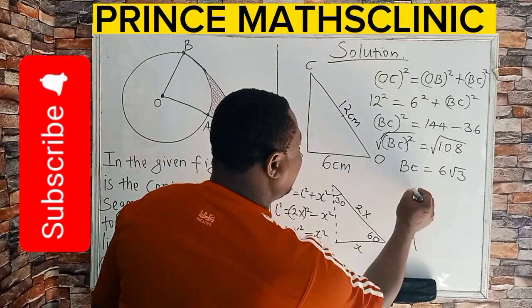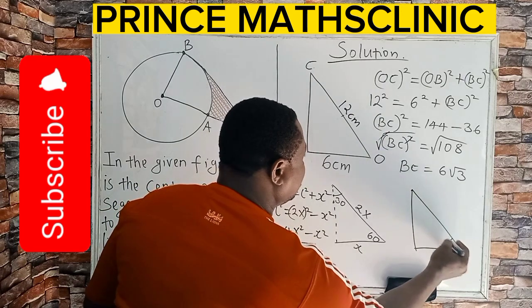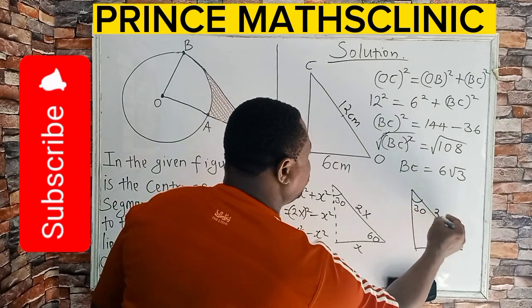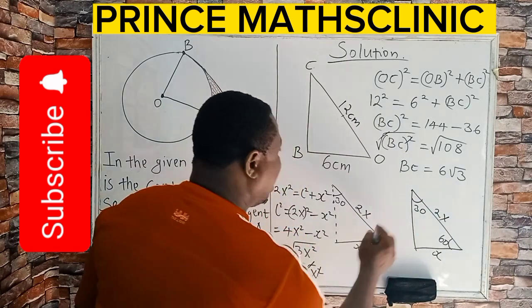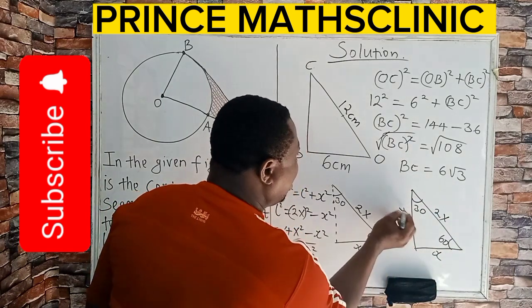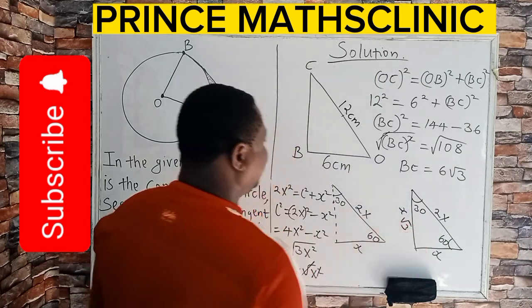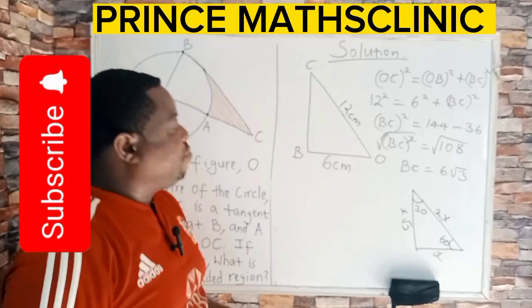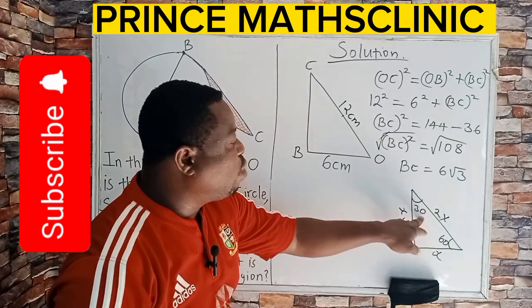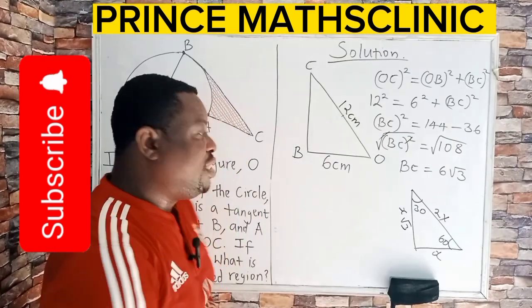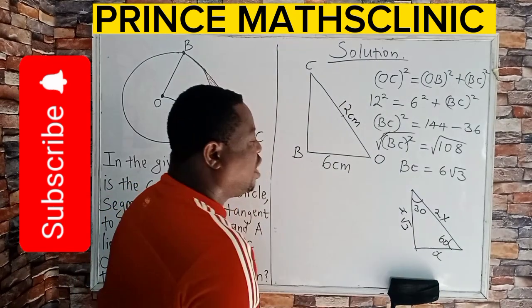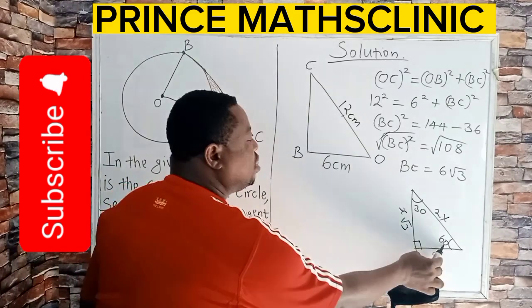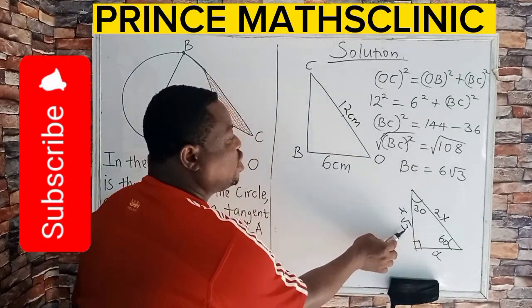So therefore, the special triangle looks like this. If this is 60 degrees, this is 30 degrees, this is 2x, this is x, this is now x, this side is now x root 3. The things I need here, look at it, side facing the smallest angle is x. Therefore, the hypotenuse here is double of the smallest side. And the side facing 60 degrees is x root 3.